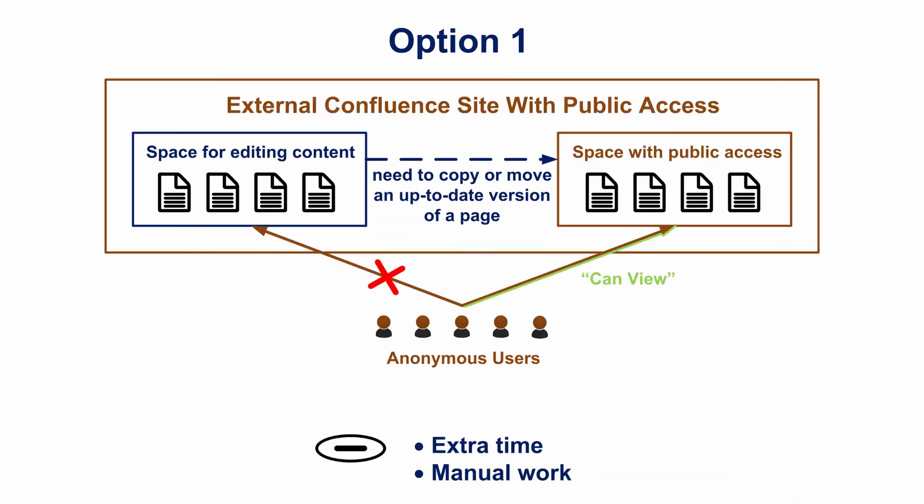While talking about a separate Confluence instance for anonymous users, we mentioned the inconvenience related to working with drafts. It can be difficult to create drafts in your corporate Confluence but publish them in the Confluence instance with public access. We can offer you several solutions. The first option is to create your drafts in a separate space of your Confluence with public access. You need to restrict anonymous access to this space; otherwise, all the changes made to the content will be visible to everybody. When you are ready to publish the page, you can copy or move it from this space to the public one.